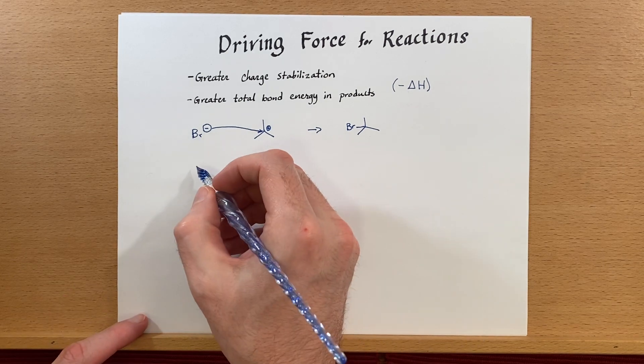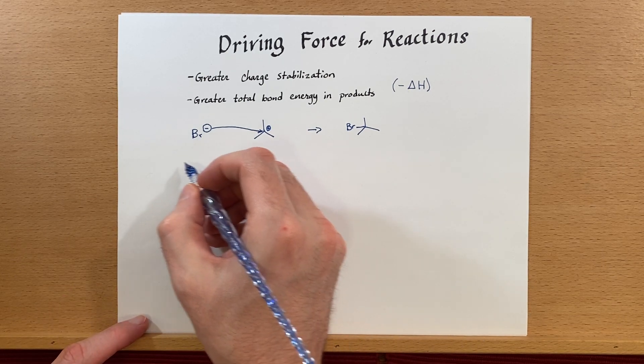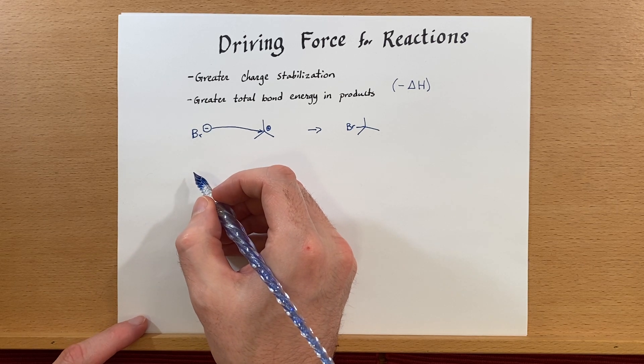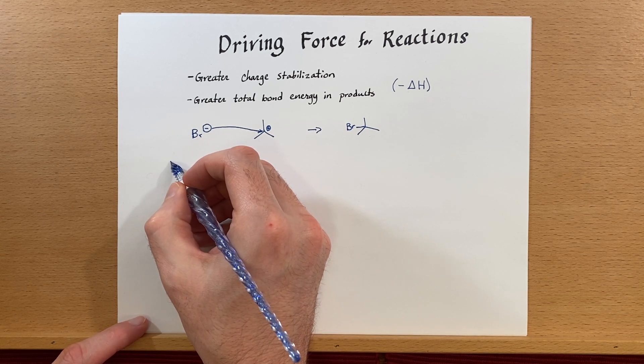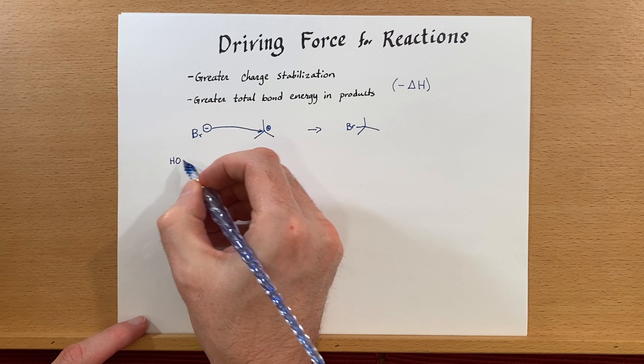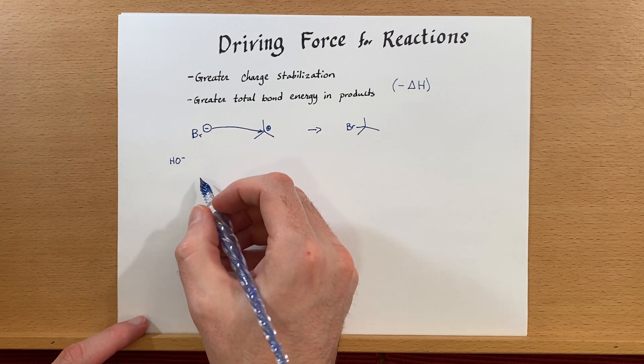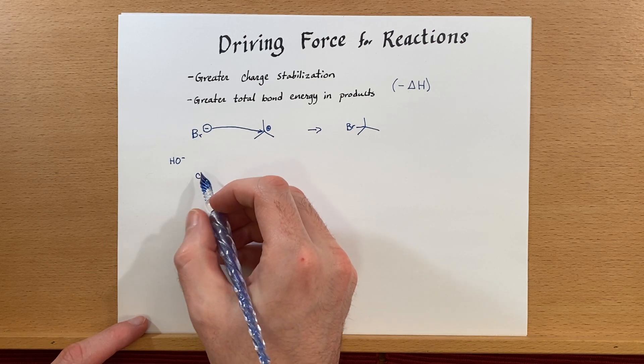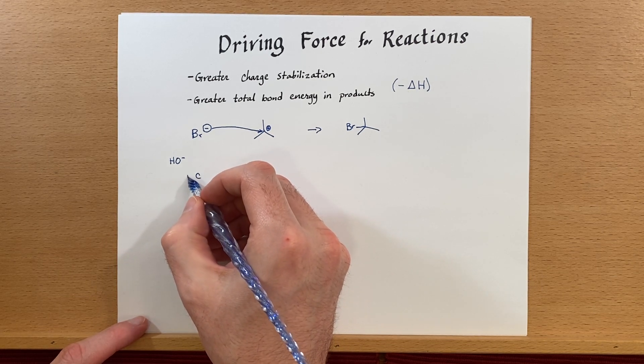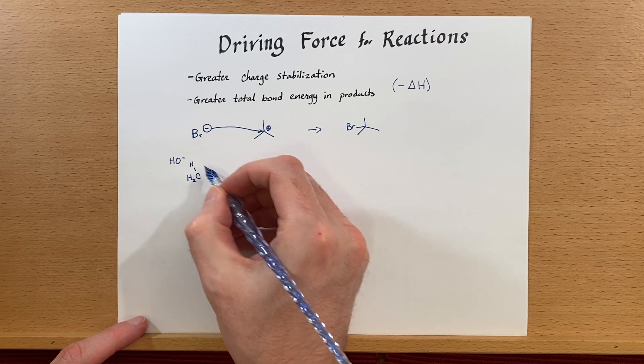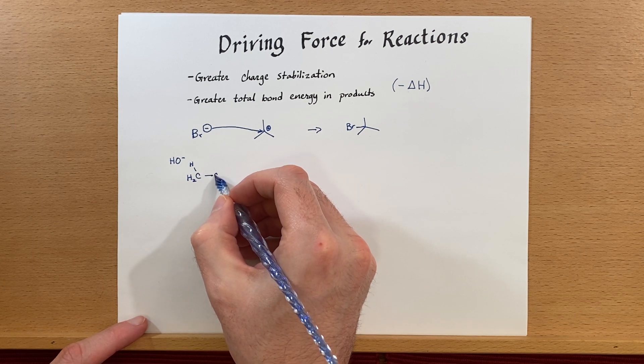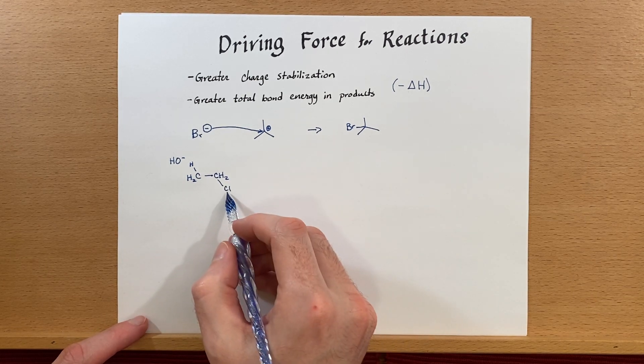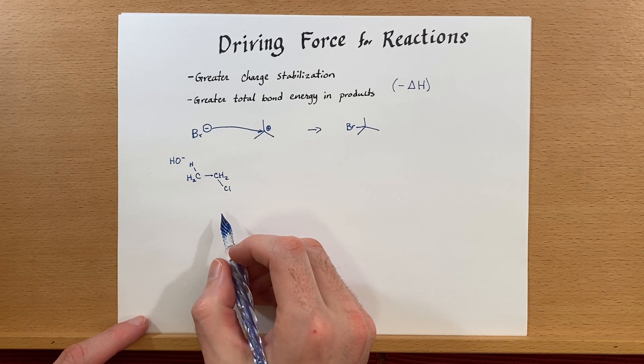Let's look at another reaction. Here, we're going to look at an E2 mechanism. So we'll have a base, which has a charge there, and then we'll have to have some substrate. We'll have our leaving group as a chloride.